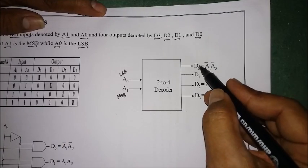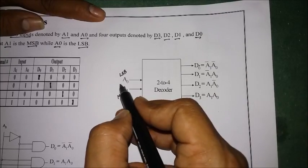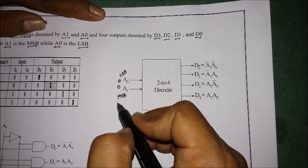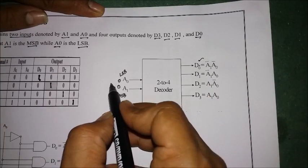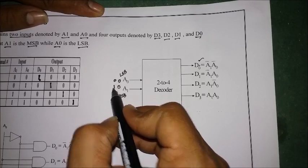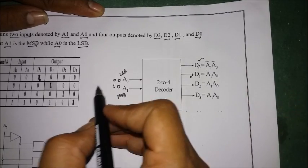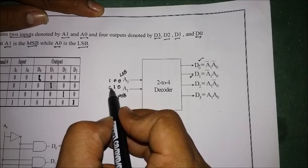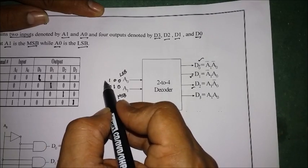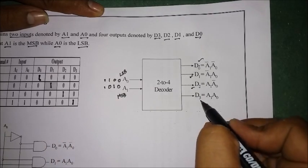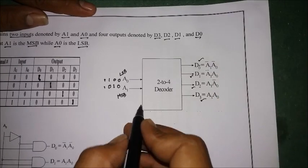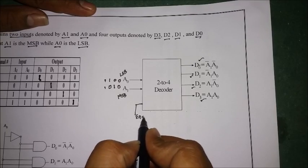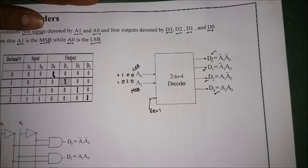The four combinations map to outputs D0, D1, D2, and D3. When input is 00, the output D0 is selected and shown as 1. When it is 01, D1 is the output. When 10, D2 is the output. When 11, D3 is the output. Out of the four outputs, one will be selected, and note that enable equals 1.